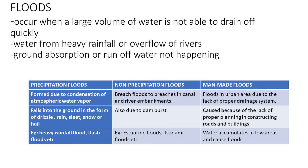The natural disaster we are going to discuss in detail today is floods. Floods occur when a large volume of water is not able to drain off quickly. This can happen because of heavy rainfall, overflow of a river, or a dam bursting. After this large volume of water accumulates, if runoff or ground absorption does not happen, floods occur. For understanding, floods can be divided into three types: precipitation floods, non-precipitation floods, and man-made floods. Precipitation floods are formed due to condensation of atmospheric water vapour.